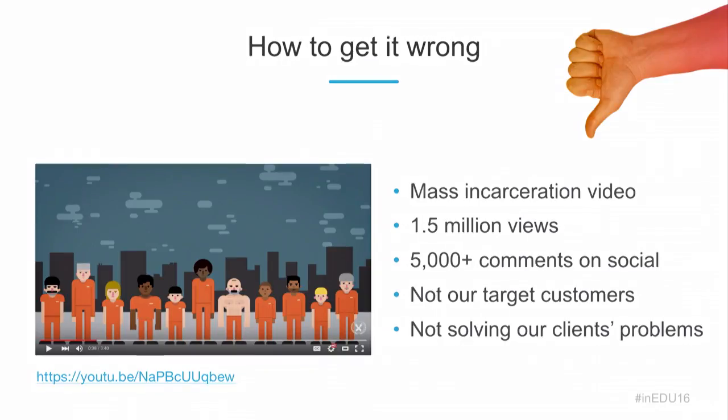You want the intersection of where you have brand equity and people will trust you. If Visually were writing about trends in online education, we'd have no credibility there. We've got to stick to our knitting and find overlaps between what we talk about and what our customers care about. A great example of doing it wrong: we did a video around mass incarceration that got 1.5 million views and 5,000 social comments — but it did not address anything our core market cares about. We sell to content marketers, social media marketers, demand gen, and PR communications.